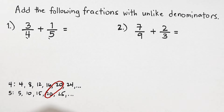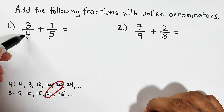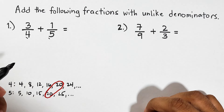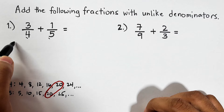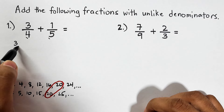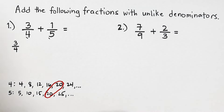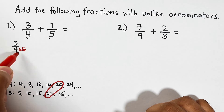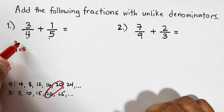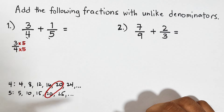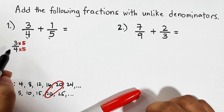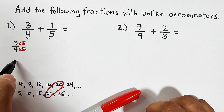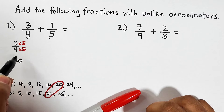The least common multiple for these fractions is twenty. We will multiply the original denominator by a number to make it twenty. We use five, so we have three over four times five, and since we multiplied the denominator by five, we also multiply the numerator by five.